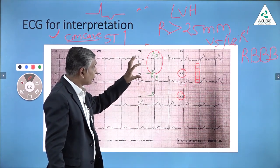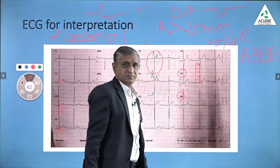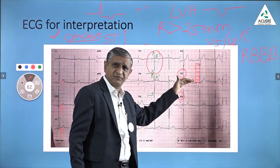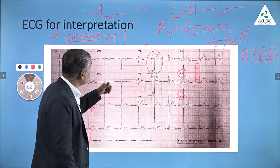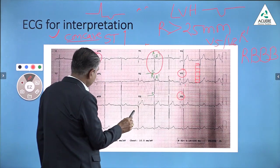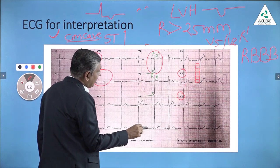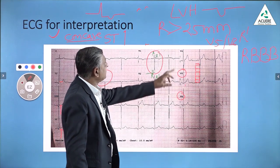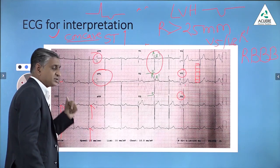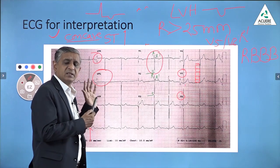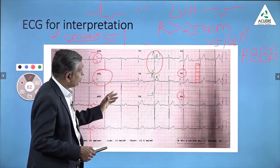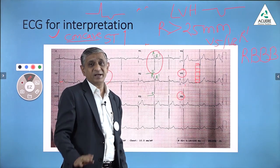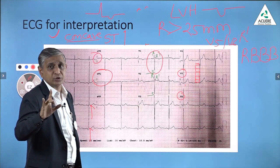But this is very important: the tall R wave should be accompanied by T wave inversion in the lateral leads. The height of the R wave should exceed 25 millimeters in V5 or V6, but it must be accompanied by inverted T waves in lead 1, AVL, V5, and V6. None of these leads are showing inverted T waves. Furthermore, left ventricular hypertrophy is generally associated with left axis deviation, and this ECG is not showing left axis deviation. So this ECG is not showing left ventricular hypertrophy — only higher amplitude R waves in V5 and V6.